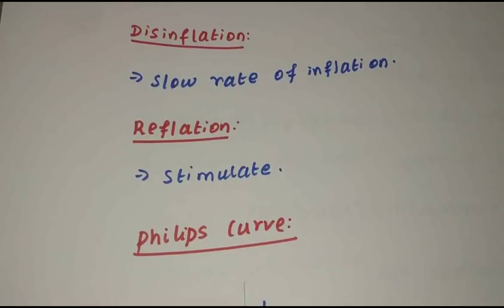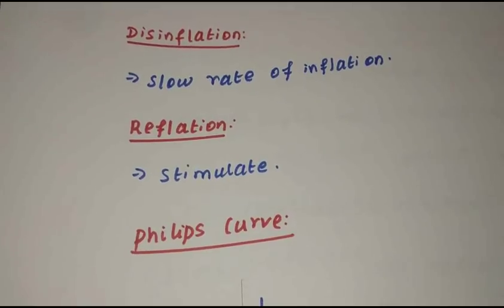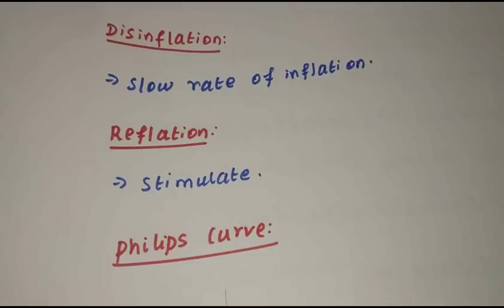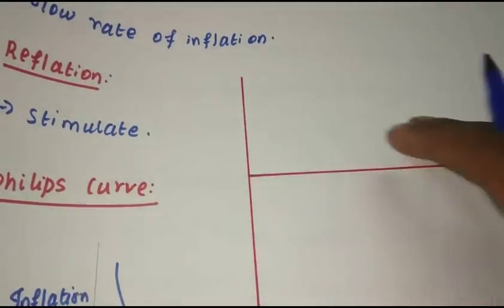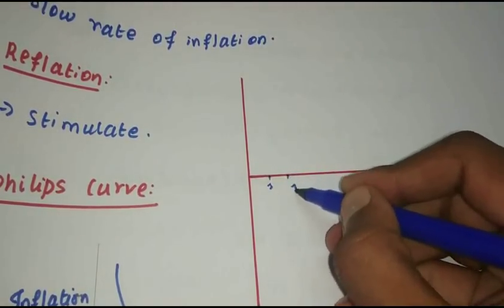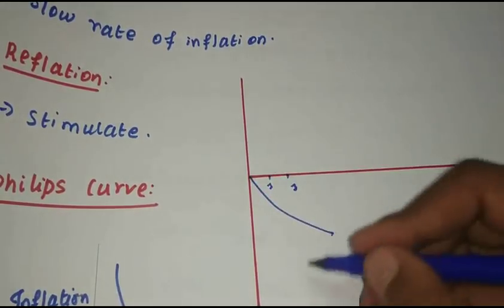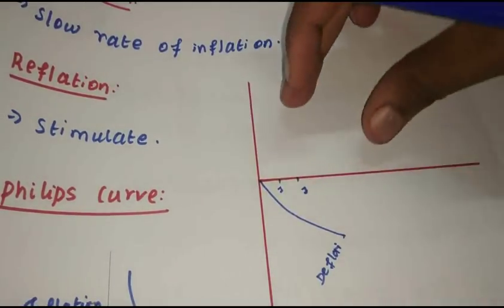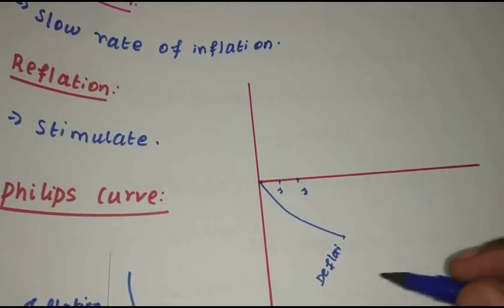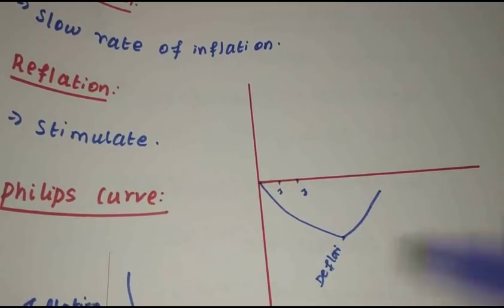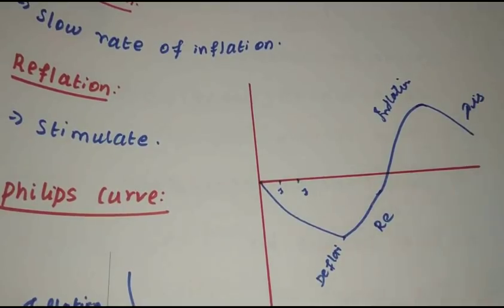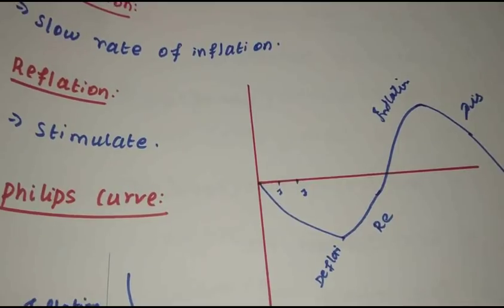Next, disinflation — a slow rate of inflation, where inflation is still present but at a lower rate. Reflection brings inflation back. The cycle is: inflation, deflation, disinflation — this is the economic cycle. The definition of each is important.